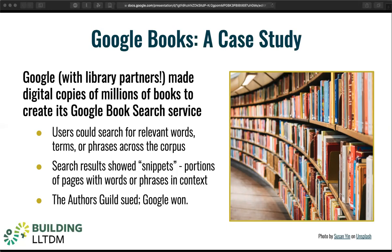Using Google Book Search, users could identify books that contained a desired word or phrase. Google's search results showed limited snippets of the text, about an eighth of a page, so users could see their term in context and get a better sense of the results' relevance to their interests. They also linked users to local libraries and online bookstores where copies of the work could be found.